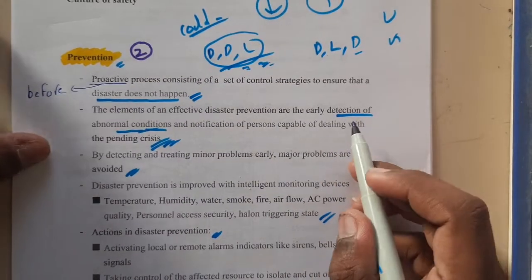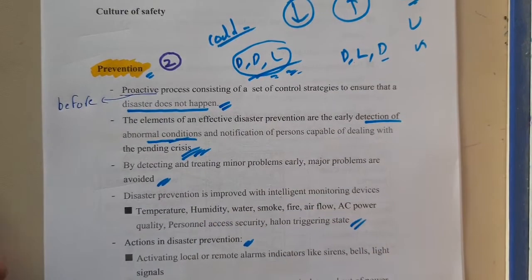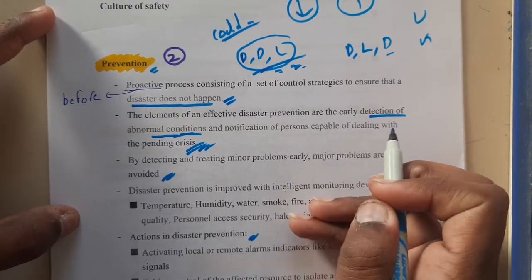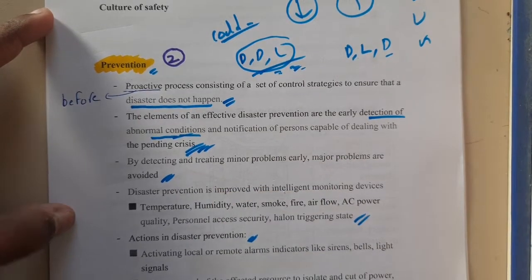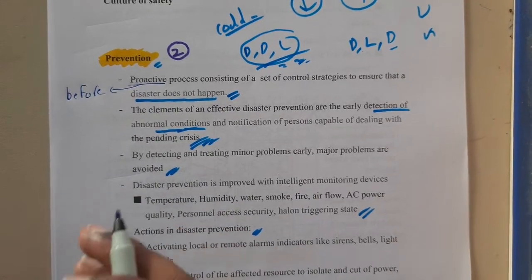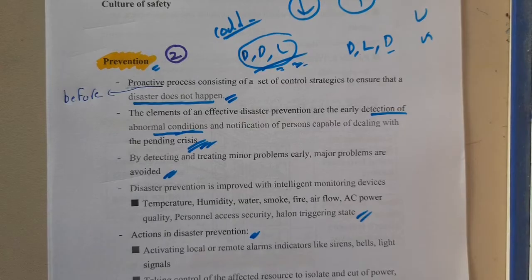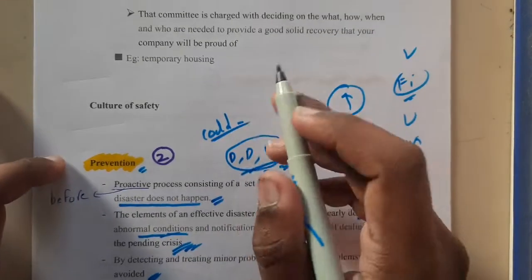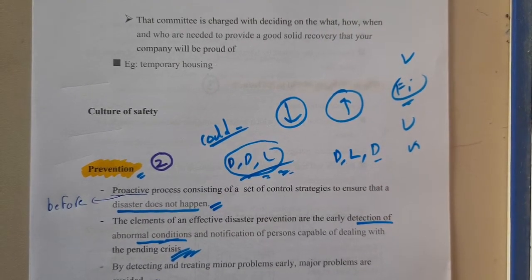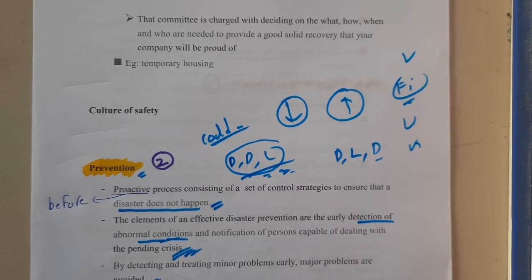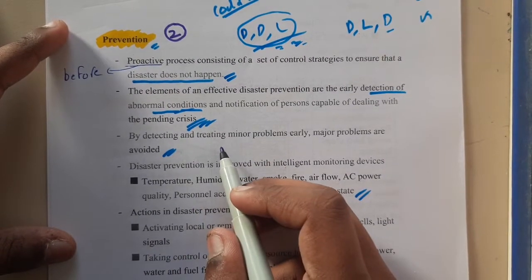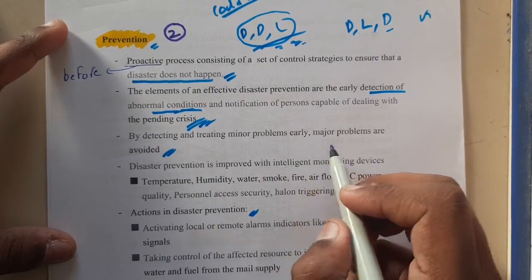You need to do early detection of abnormal conditions and notify the person capable of dealing with the crisis. If there is a fire alarm, messages will automatically go to the fire station. Similarly, if there is a theft, alarm systems will send notifications to the nearby police station. There are multiple such systems available.